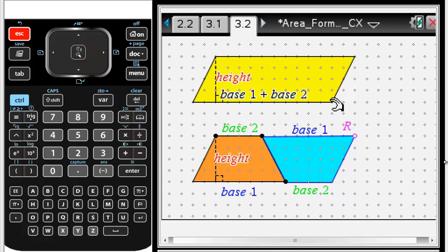The area of the parallelogram is base 1 plus base 2 times the height. These are two equal so the area of the trapezoid is only half the height times the sum of the bases which is the area formula we do want. End of video.